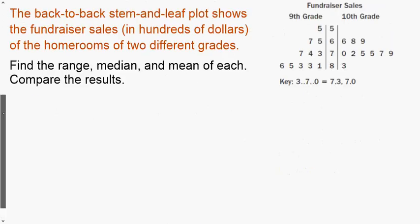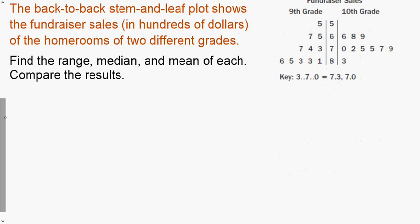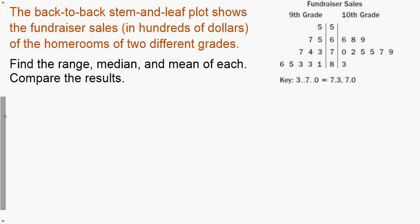Our last example here, another back-to-back stem-and-leaf plot or some will call it a double stem-and-leaf plot, either way same difference. Talks about fundraiser sales in thousands of dollars of the homerooms of two different grades. Our key, it's a little confusing here so it should be that we have bars here. So 7 bar 0 represents 7.0, 7 bar 3, this would be for ninth grade here and then this would be for tenth grade.